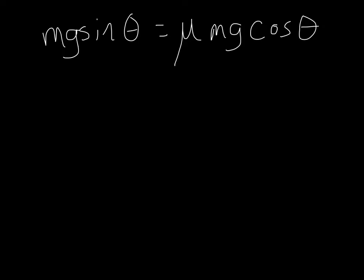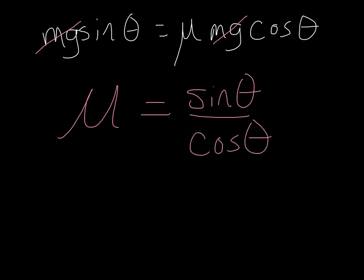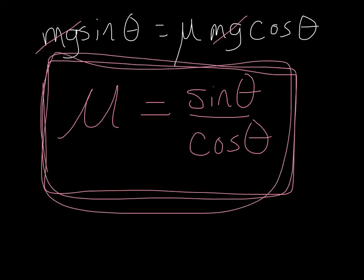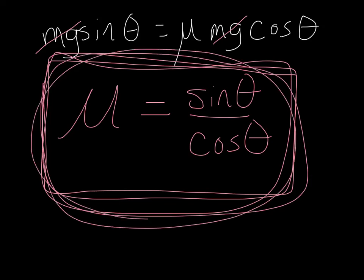Okay, so here we have mg cos theta being plugged in for Fn. Notice that now mg will divide out of both sides, and if we solve this, we find that mu is equal to sine theta over cosine theta, which is just the tangent of theta. And that's the relationship between the coefficient of friction and the angle of incline. In the case where a box is not moving, then we're talking about the coefficient of static friction. In the case where a box is sliding at a constant velocity, then that's the coefficient of kinetic friction.